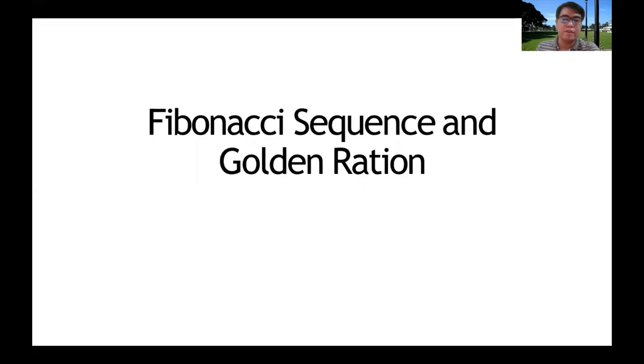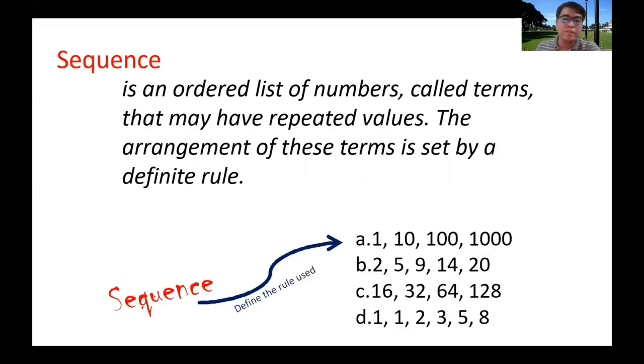Good day everyone, this is lesson 1.3: Fibonacci Sequence and Golden Ratio. A sequence is an ordered list of numbers called terms that may have repeated values. The arrangement of these terms is set by a definite rule.